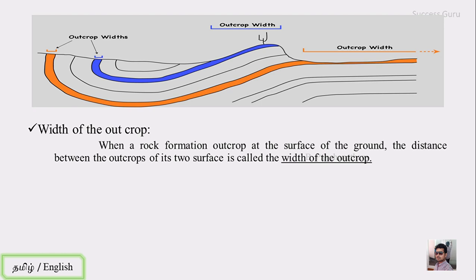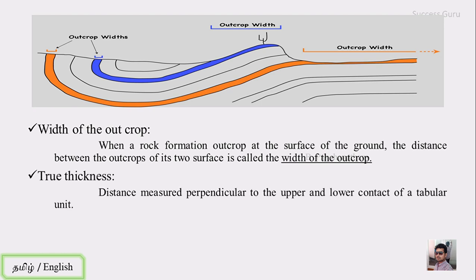First term — what is true thickness? The distance measured perpendicular to the upper and lower contact of the tabular unit. So this is a tabular unit with a lower contact and an upper contact. If we measure the width perpendicular to the contacts, that thickness is called the true thickness, T. This is measured in the right direction, perpendicular to the bedding plane.